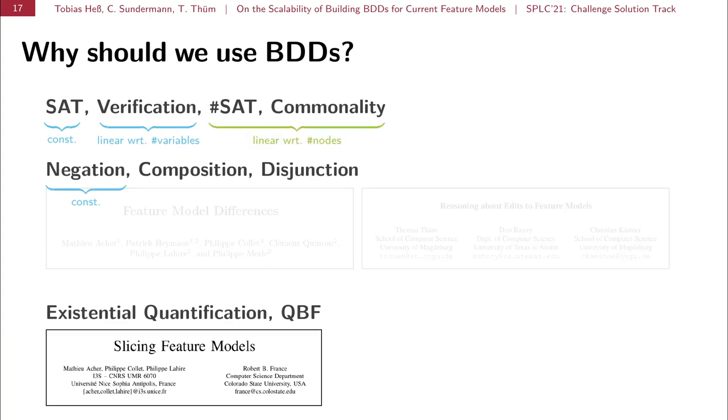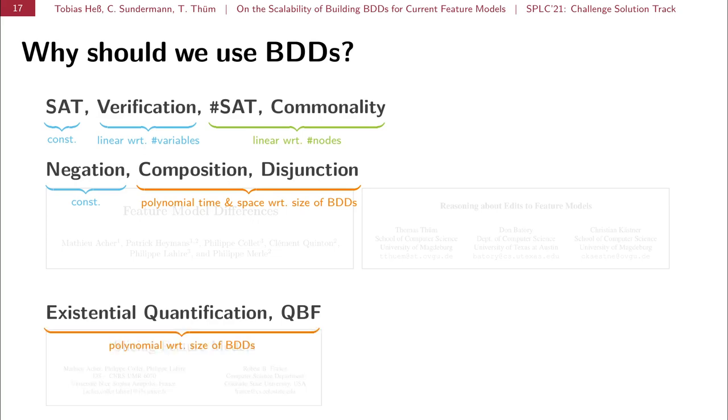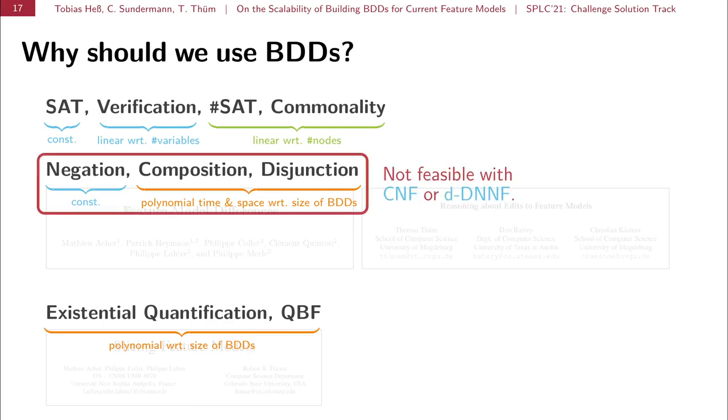If we go to counting, then we are still efficient linear with respect to the number of nodes. Composition and disjunction are polynomial in time and space with respect to the size of the BDD, compared to explosion of the conjunctive normal form. And existential quantification can also be computed in polynomial time with respect to the size of the BDDs. And we want to stress that this is not feasible with CNF or d-DNNF as input.